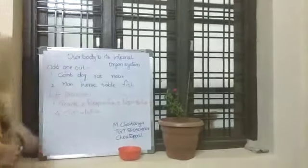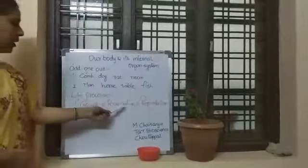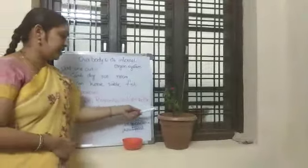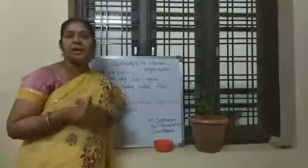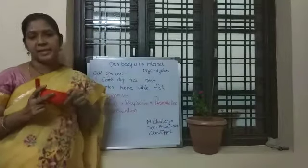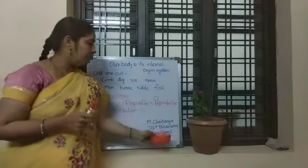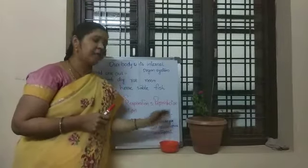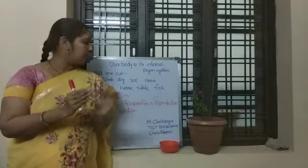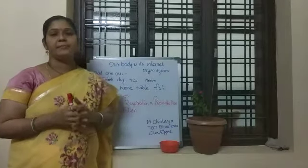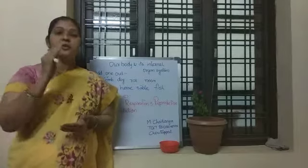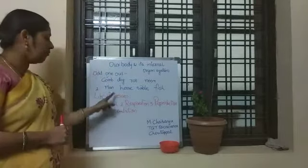This plant is showing the quality of growth, respiration, reproduction, circulation, and many other things can also be observed in the plant. Whereas, we cannot observe any of these qualities in this bowl. By this comparison, we can say that living organisms will perform some of the processes in them which are not performed by the non-living organisms. Those are called life processes.